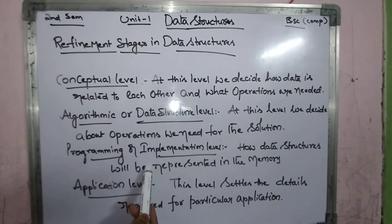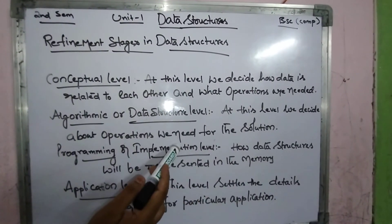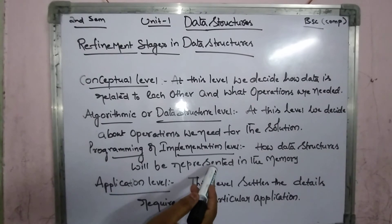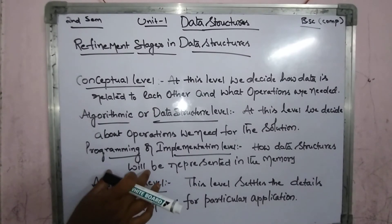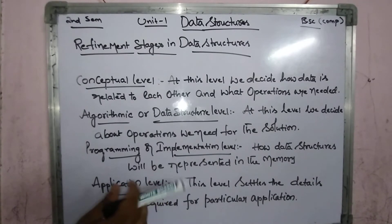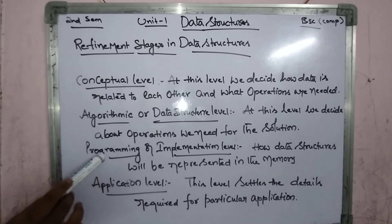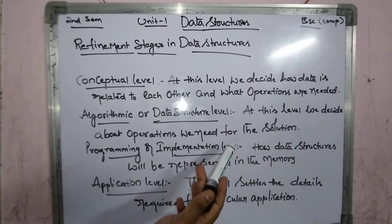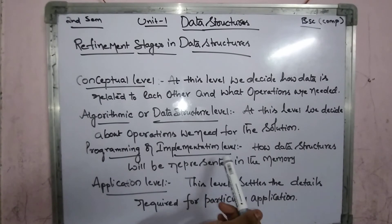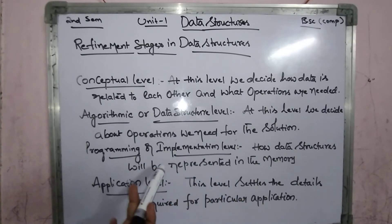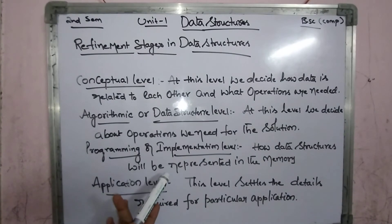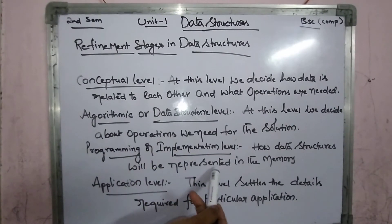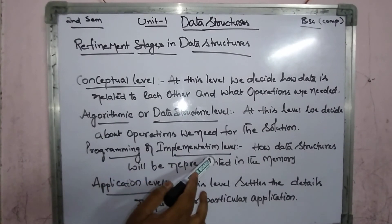The next one is the programming or implementation level. Here we decide the details of the data structure — how it will be represented in the computer memory. We decide what kind of data structure to use at the memory level. This level is the programming or implementation level.